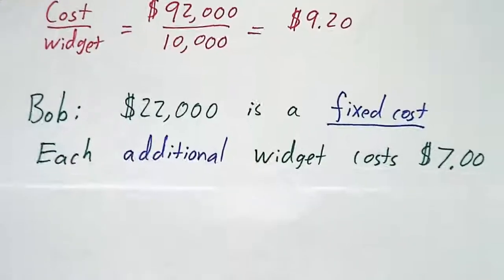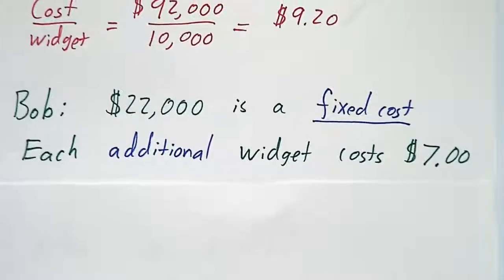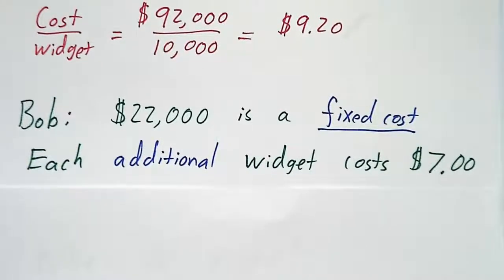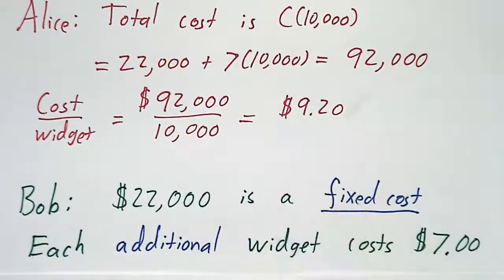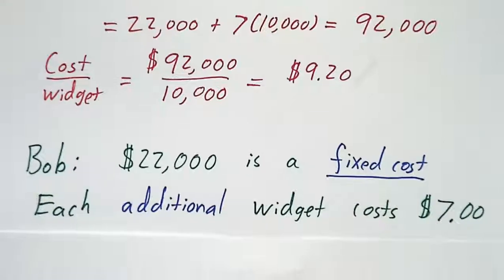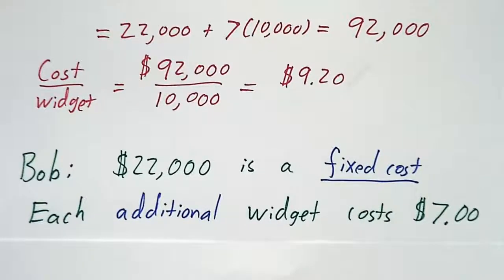On the other hand, Bob argues that we really shouldn't count the 22,000, because you have to pay the 22,000 no matter how many widgets you're making. That's a fixed cost. Every additional widget only costs us $7. So according to Alice, the cost per widget is $9.20. According to Bob, the cost of each widget is $7. Who's right?